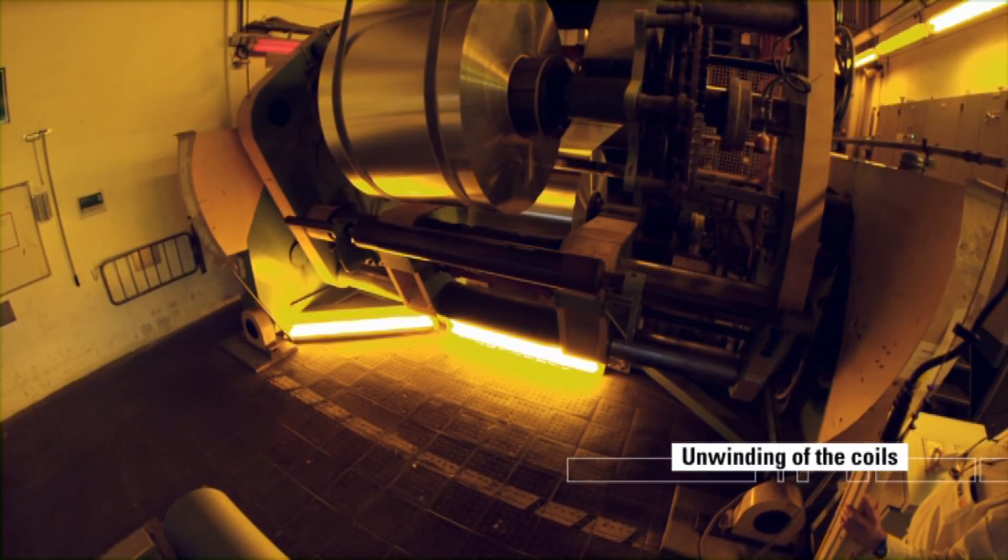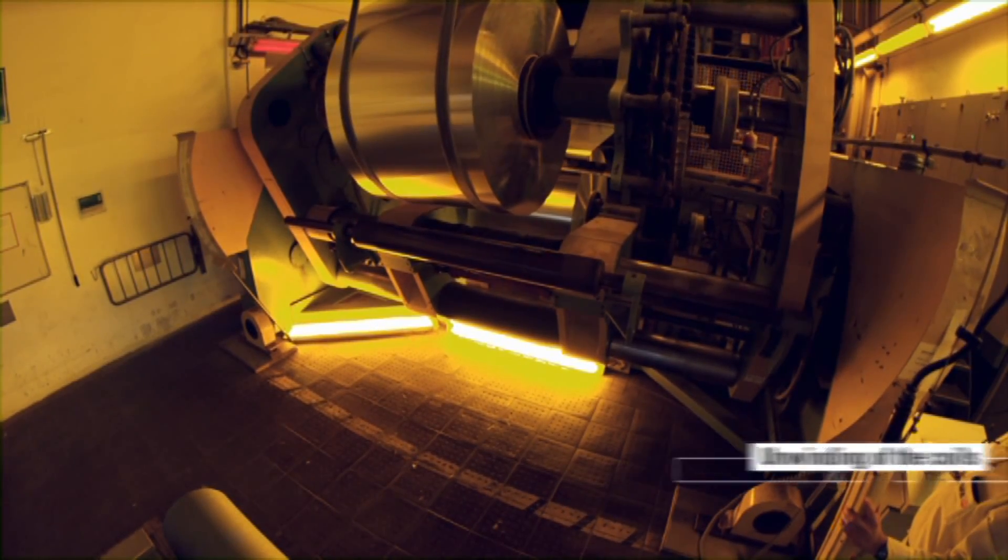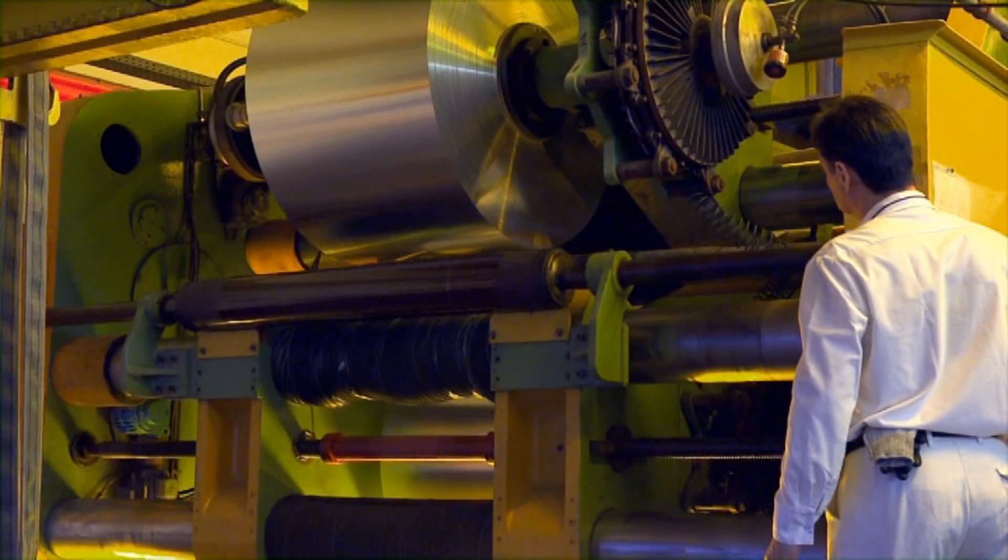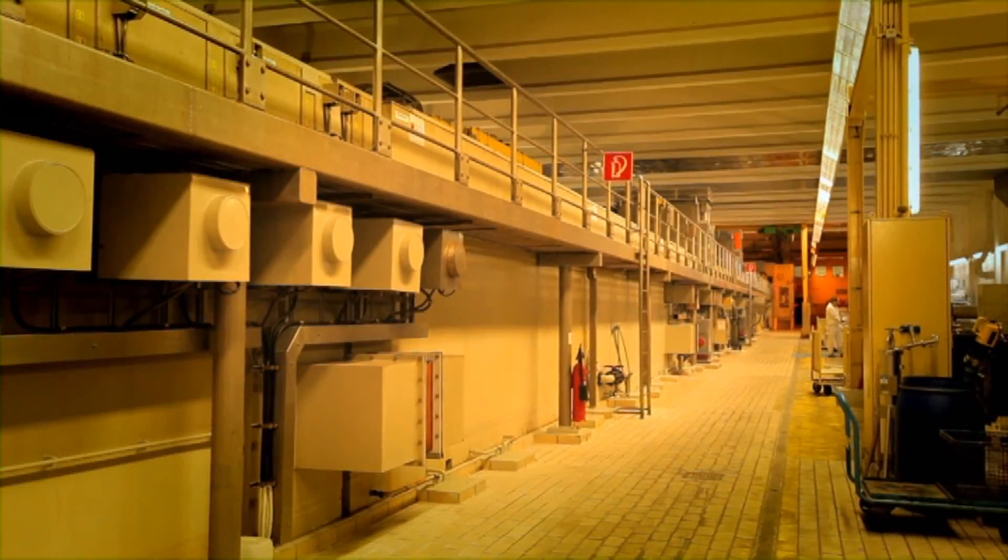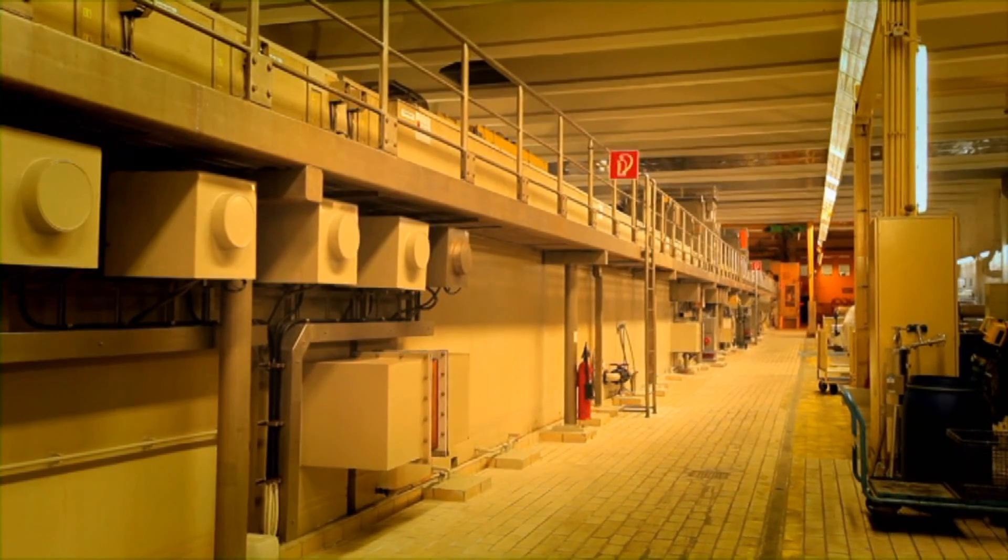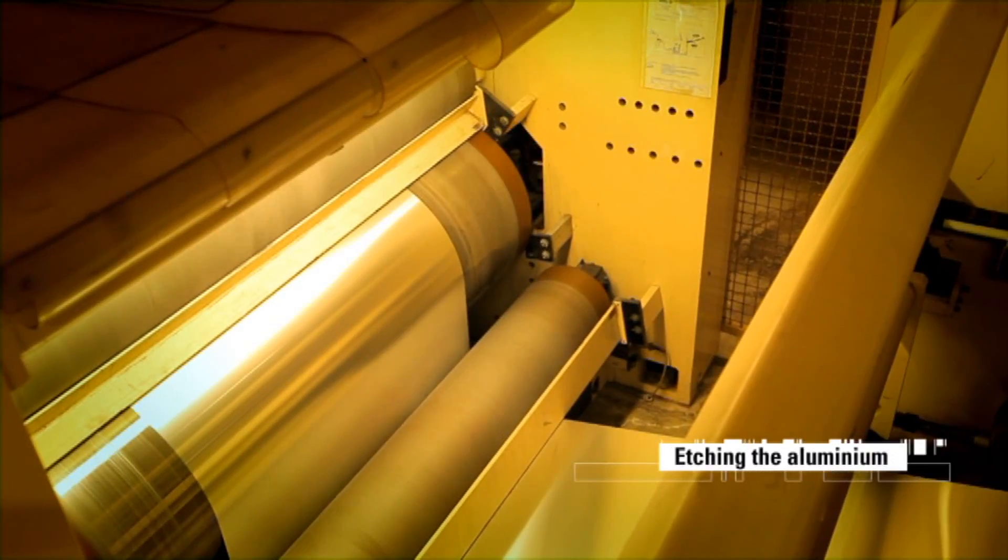As the name implies, the unwinder section of the process is where the sheet aluminum is unwound from the coil. The first stage of the coating line is wet and is where the aluminum is etched to clean the surface.